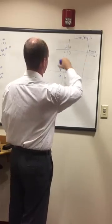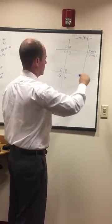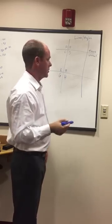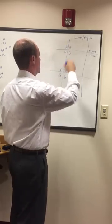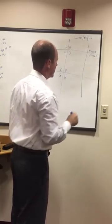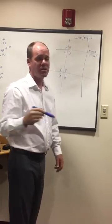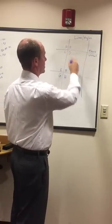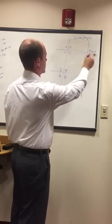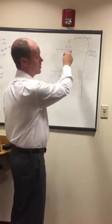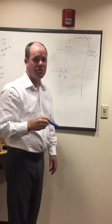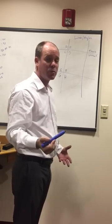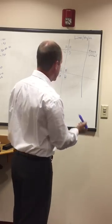So first, we have two parallel lines and then two lines crossing it. A lot of times you'll get a question that says: given two parallel lines and a transversal crossing it. All it really means is there are two parallel lines and this transversal — this line crossing it — makes all these rules happen. If the lines weren't parallel, the rules wouldn't stay true.